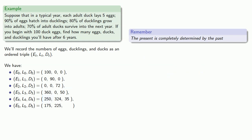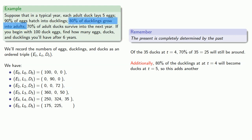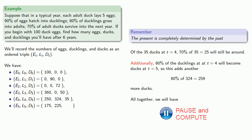Of the 35 ducks at t equals four, 70% or 25 will still be around. Additionally, 80% of the ducklings at t equals four will become ducks at t equals five, and so this adds another 259 more ducks. And so all together, we'll have 284 ducks at t equals five.